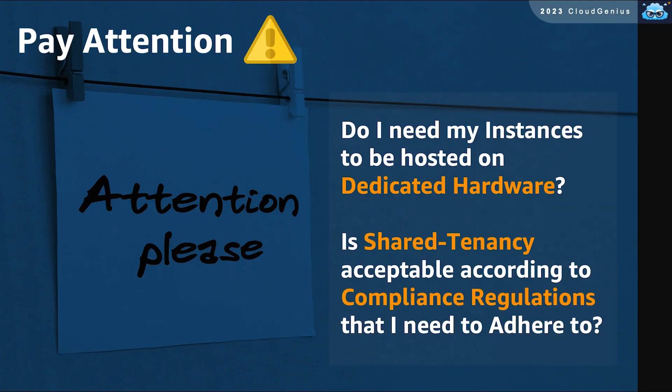Have you thought about where your instances are physically hosted? Think about tenancy and the most common use case in the cloud, known as shared tenancy. The cloud provider, AWS, hosts on the same hardware different instances that belong to different customers, while segregated from each other. In most cases that is widely accepted; however, in some scenarios, some customers for specific workloads might not find that suitable.